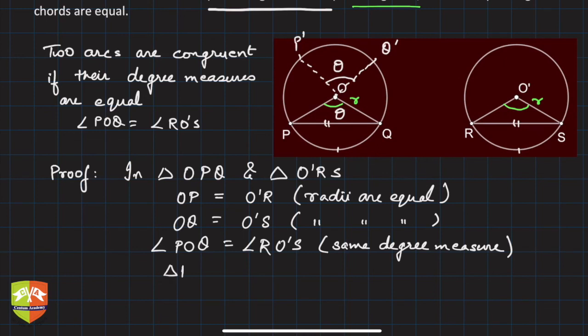Be very careful with the order of vertices—you have to write it correctly, otherwise congruence may not be established. O equals O', clearly angle P equals angle R, and angle Q equals angle S, so the order is correct.